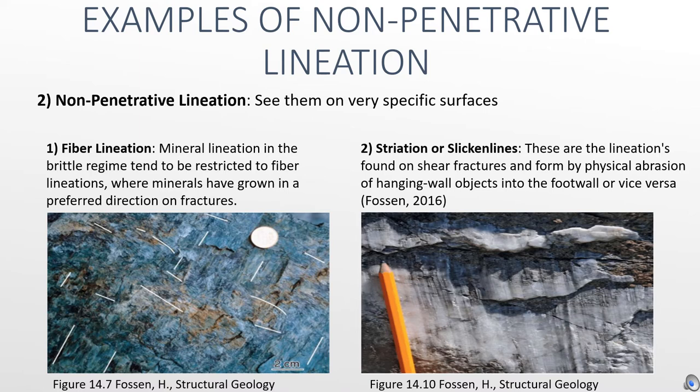The second one is slicken lines, which are formed by physical abrasion of hanging wall objects into the foot wall. The smooth slip surface is called the slicken lines.